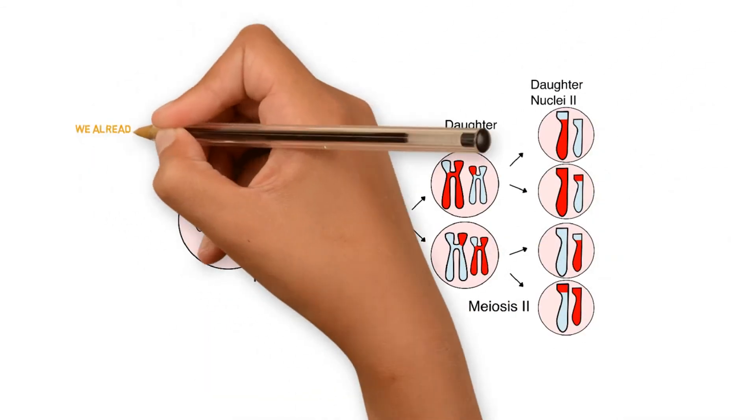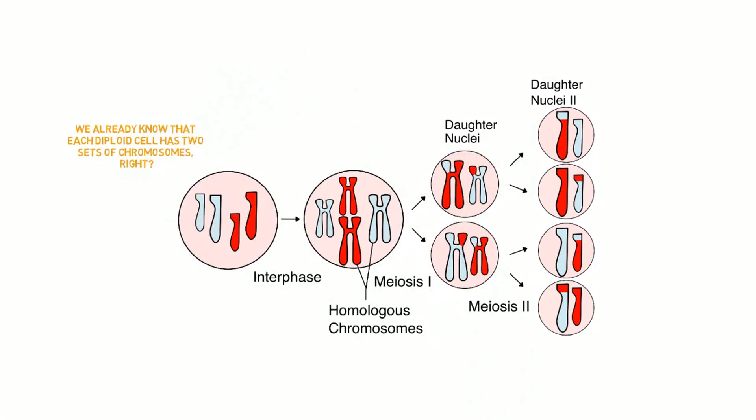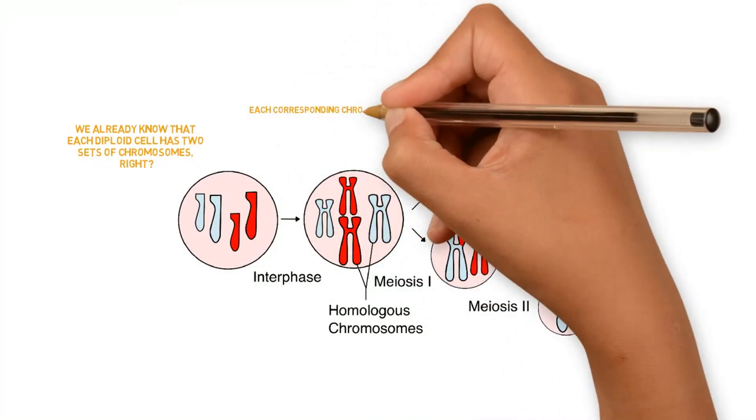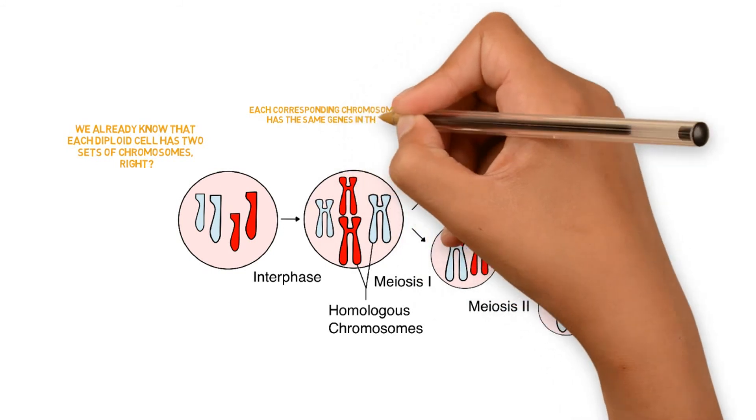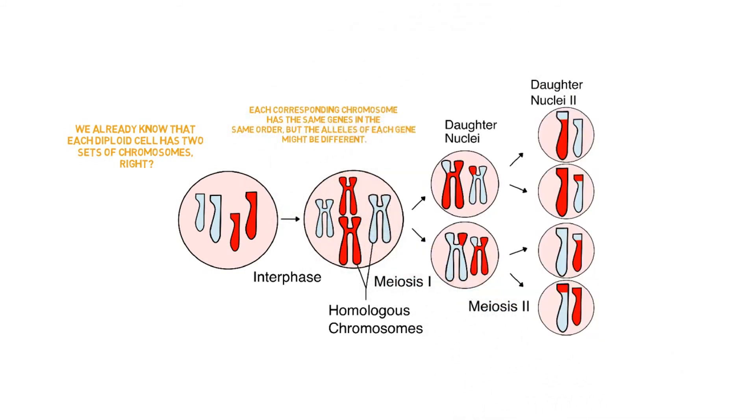Let me explain. We already know that each diploid cell has two sets of chromosomes, right? So, each corresponding chromosome has the same genes in the same order but the alleles of each gene might be different.